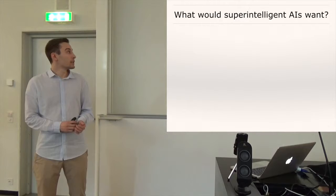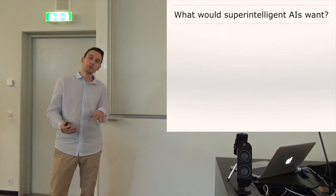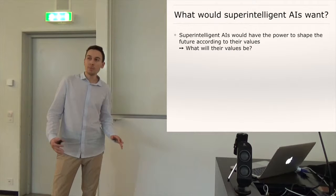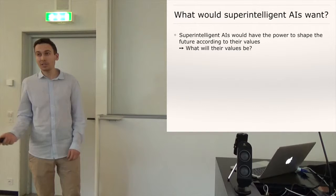So basically the AIs would have the power to shape the future completely according to their values. So the most important question we can ask ourselves is what will their values be? And so some people assume well, you know, they're super intelligent, so they will just be super nice but it's actually not the case because intelligent doesn't automatically imply benevolence or altruism. For example, just in humans you see that there are a lot of intelligent psychopaths.